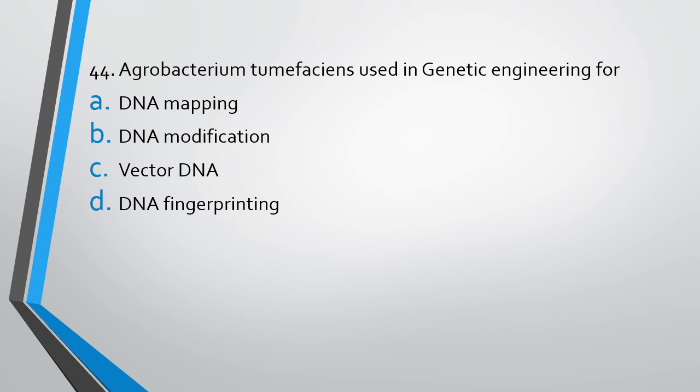Question number 44. Agrobacterium tumefaciens in genetic engineering is used for DNA mapping, DNA modification, vector DNA, DNA fingerprinting. The correct answer is it is used as a vector DNA.